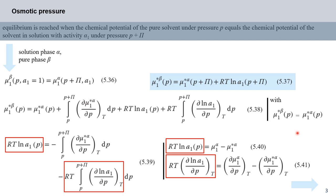We also know that mu₁*^beta must equal mu₁*^alpha, since in our model system both quantities represent the chemical potential of the pure liquid solvent at pressure p. Plugging that in and eliminating the mu's, we get equation 539: RT ln a₁ at pressure p equals minus the integral between p and p plus pi of (d mu₁*^alpha / dp) at constant T, dp, minus RT times the integral of (d ln a₁ / dp) at constant T, dp.